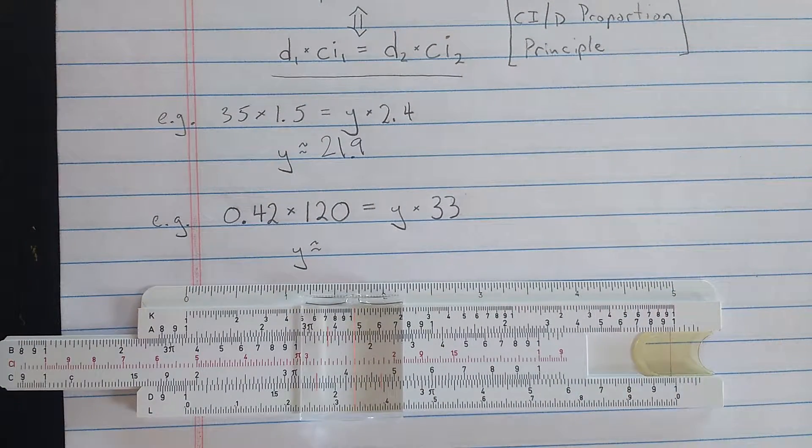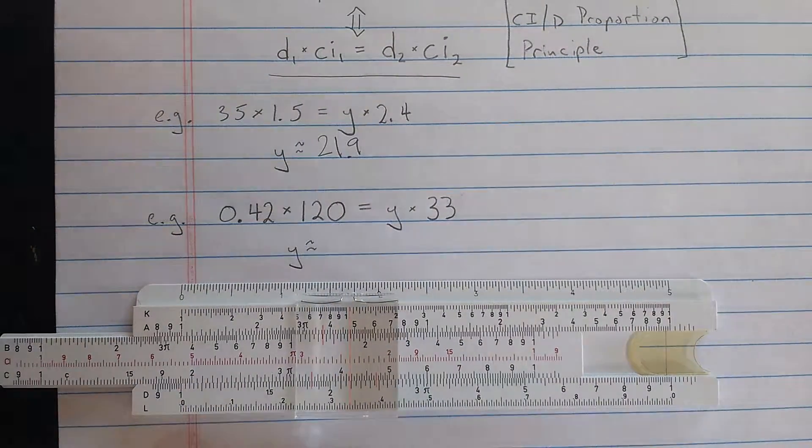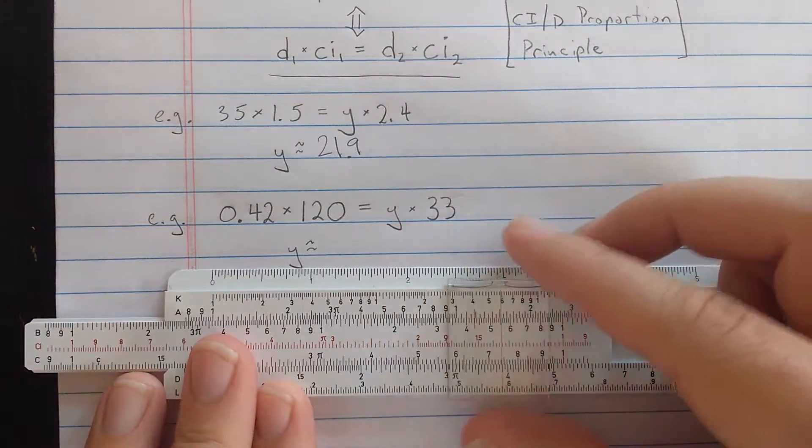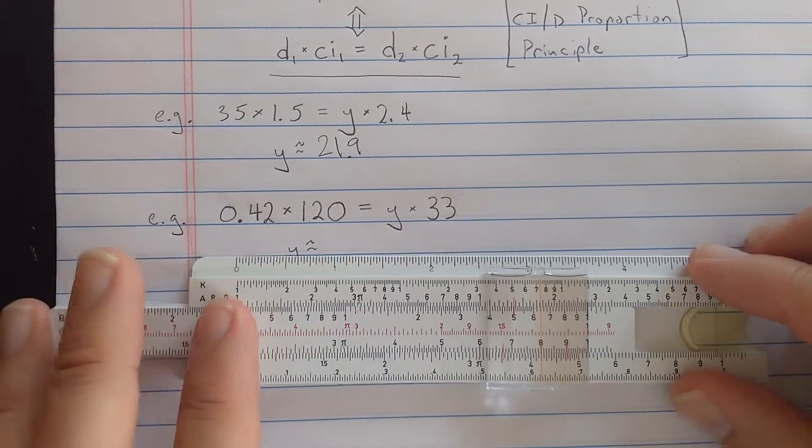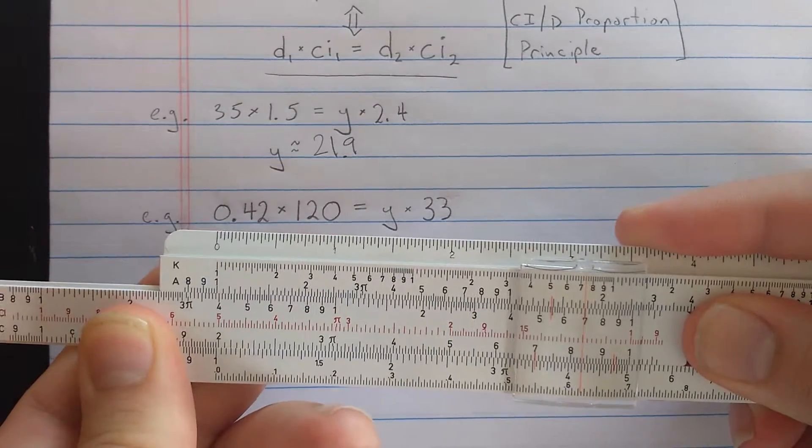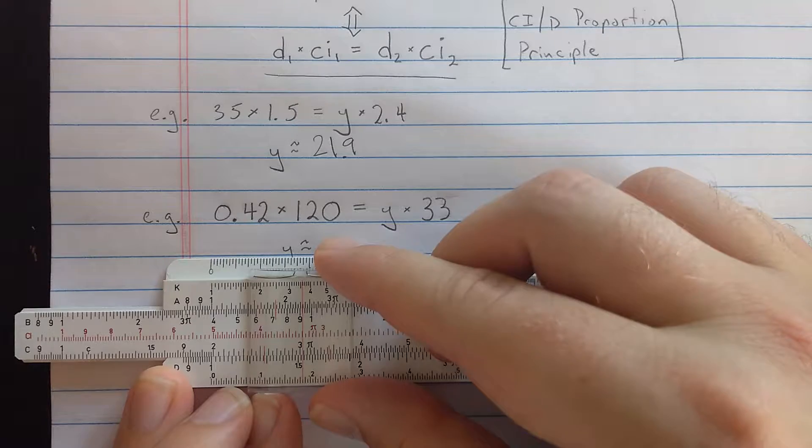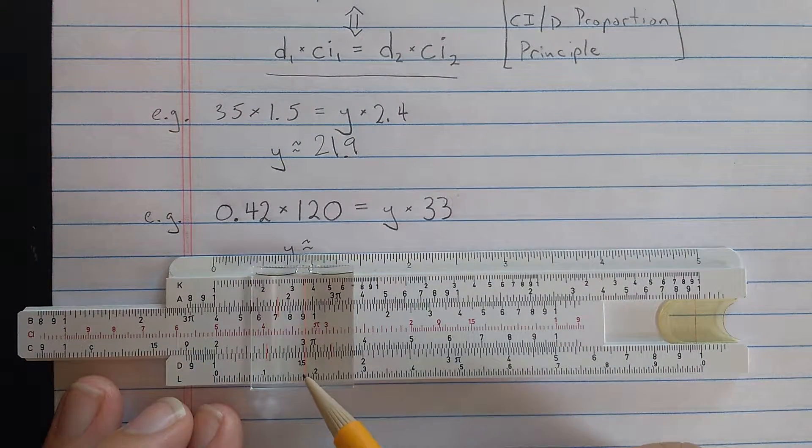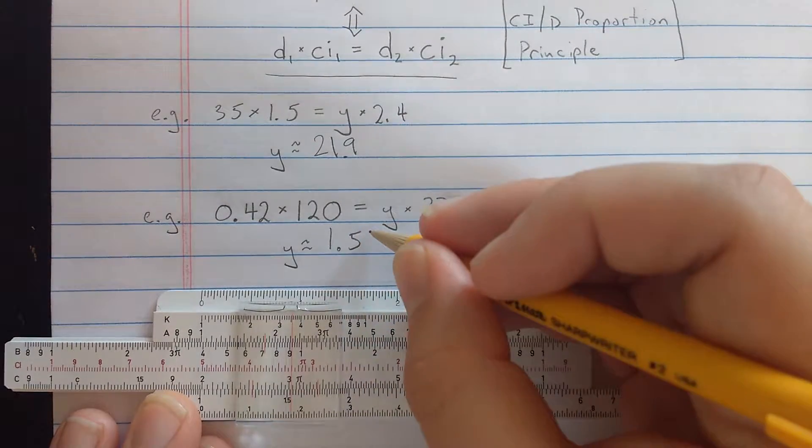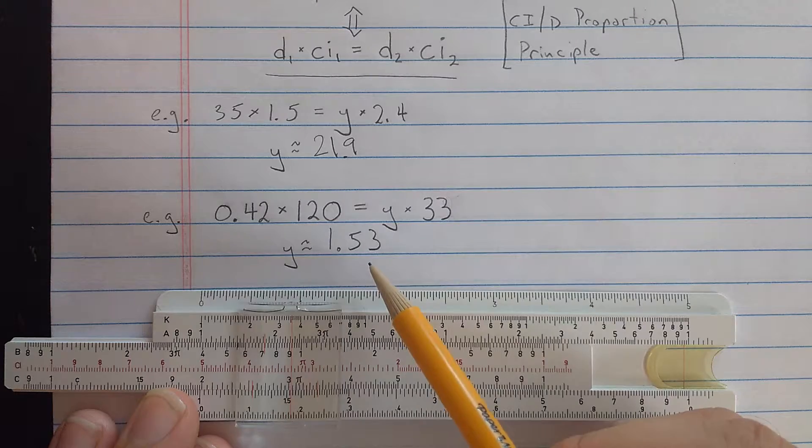Here's a quick another application. Say that you want to do this computation, maybe 120 is a voltage. So this is a constant power calculation or something, you know, you have 0.42 amps, just as an example. What could you do? Well, find the 4.2. Okay, found that on the D. Then align that with 1.2. Don't have to move too far. Align that with 1.2 on the CI. Then if you come on the CI to 33, you read the other number you need for the product. On the D scale, about 1.5 looks like 3. So if the interpretation in there is that you need 0.42 amps at 120 volts, you get the same power from 1.53 amps at 33 volts, right?